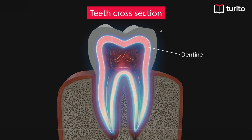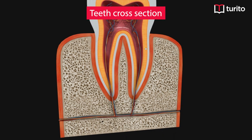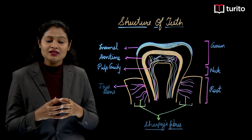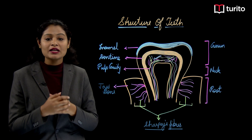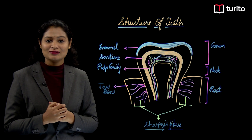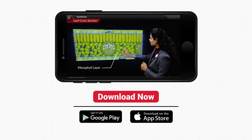Then we have the dentine layer, which is secreted by odontoblast cells that are mesodermal in origin. Dentine is present in both the crown region and the neck region, and is also extended into the root region. The pulp cavity is present in both the crown and root region, and contains blood vessels, lymph vessels, and nerve supply. The entire tooth is embedded in the jaw bone and supported by specific fibers called Sharpey's fibers. This is the complete structure of the tooth.